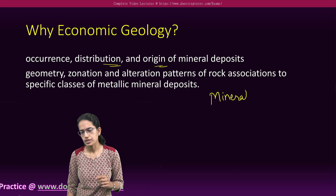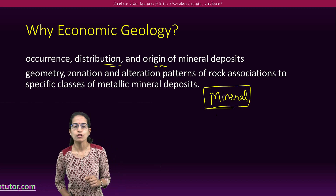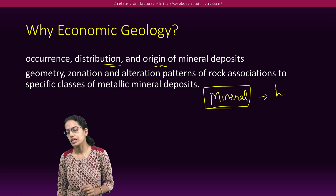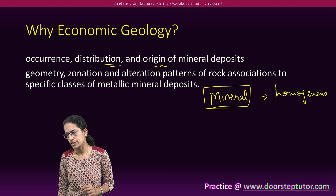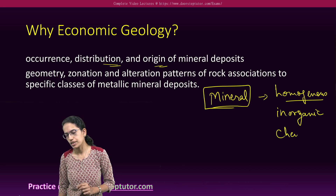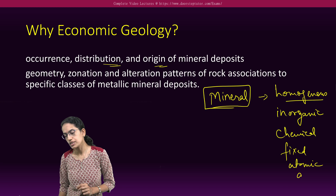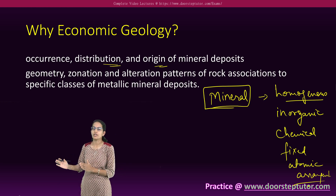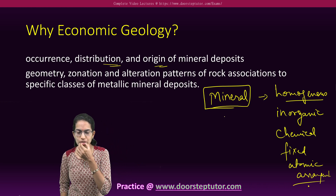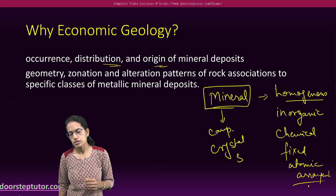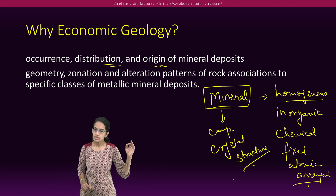Let's address a few of the important things. One very common term we come across in economic geology is minerals. What are minerals? Minerals are homogeneous inorganic compounds that exist and have a definite chemical composition and a fixed atomic arrangement. That means the structure is well arranged and established, and their chemical composition is also well known. Two things are well established under minerals: one is the chemical composition and the second is the crystal structure, which we have understood in detail under crystallography.